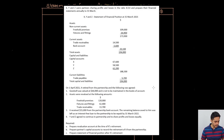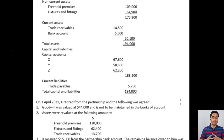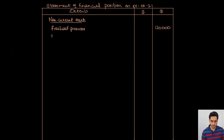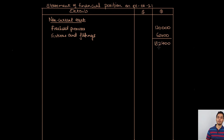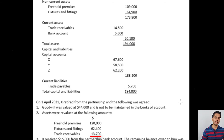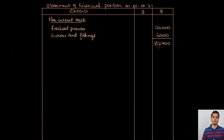When preparing the balance sheet, we begin with non-current assets, using the revalued amounts. Freehold premises are recorded at 120,000 and fixtures and fittings at 62,400. For current assets, trade receivables are recorded at the new value of 13,700 — not the old book value. The bank balance from the existing balance sheet was 5,600, but 15,000 was paid to X, creating a bank overdraft, so there is only one current asset: trade receivables.